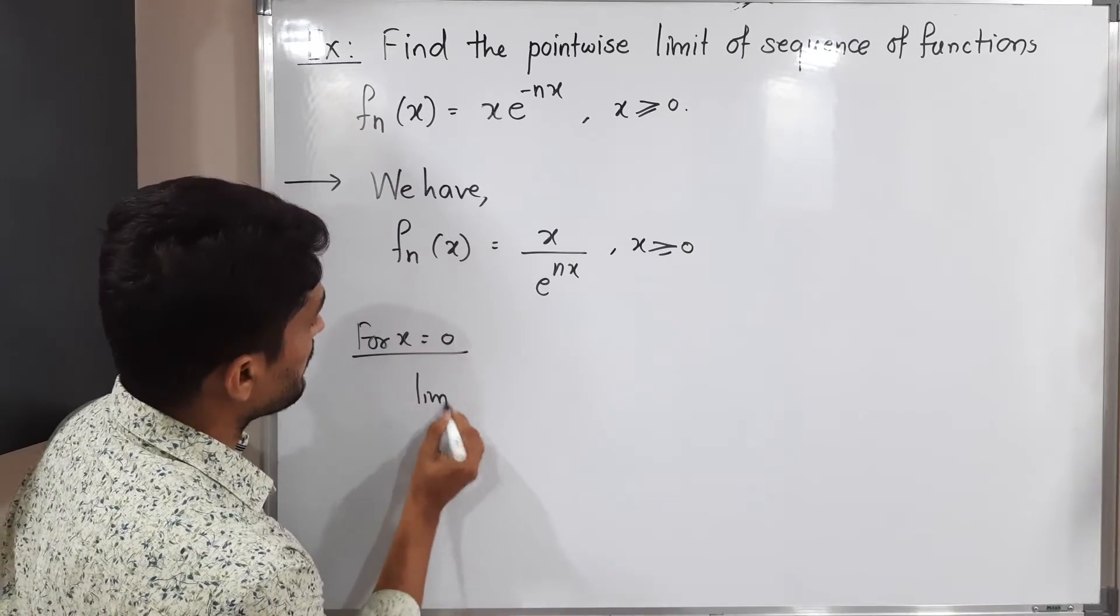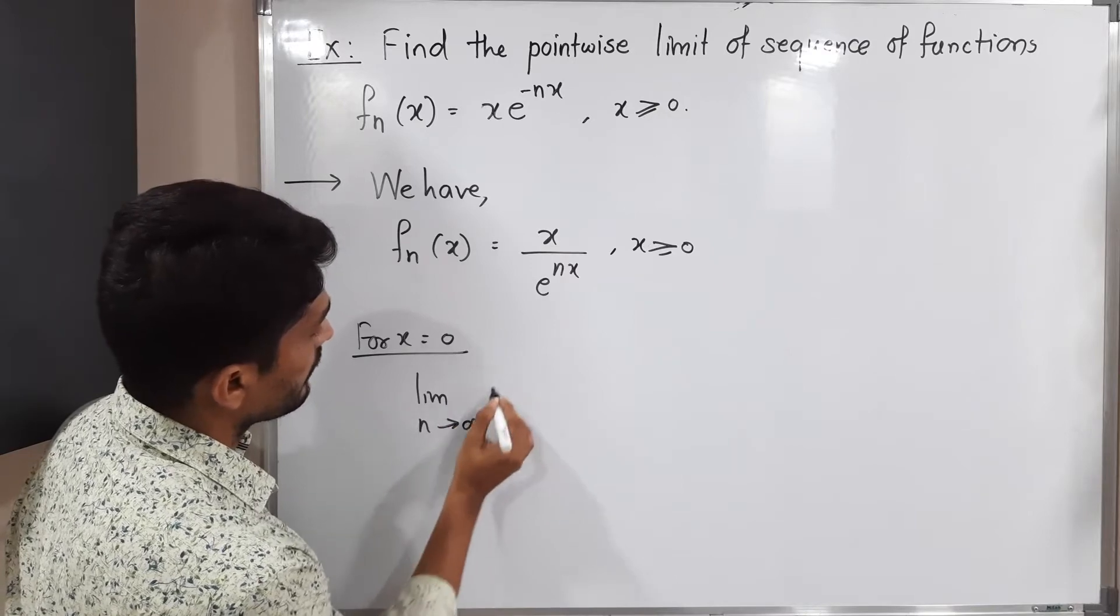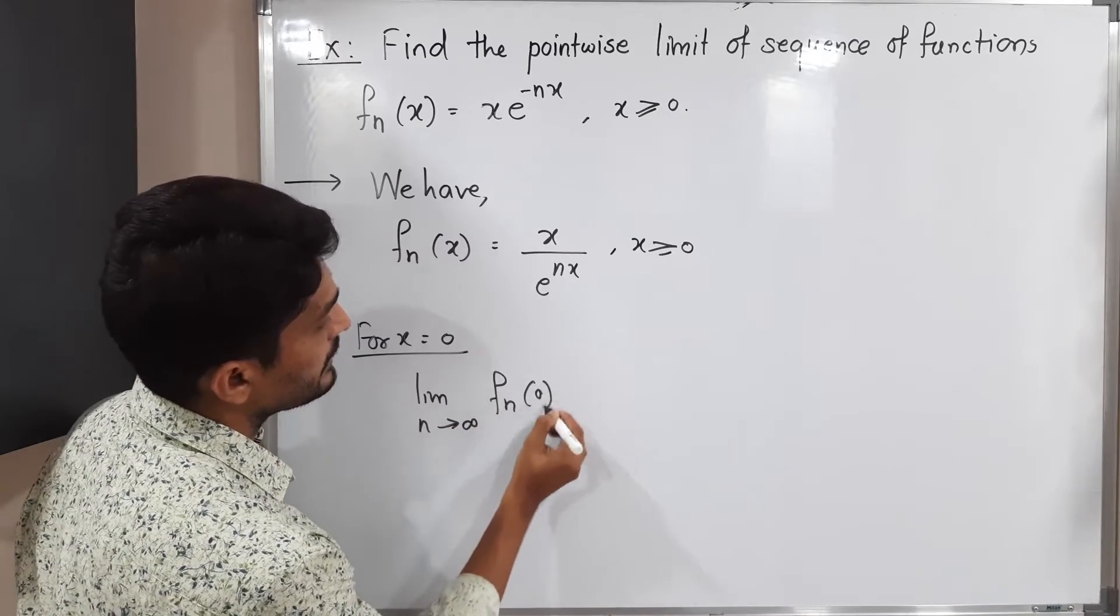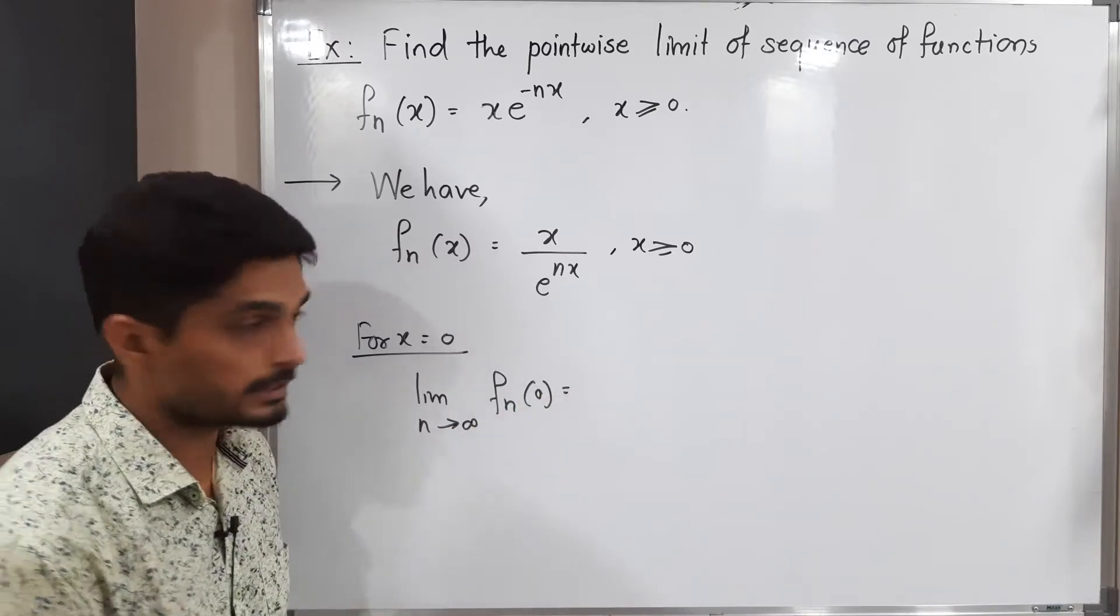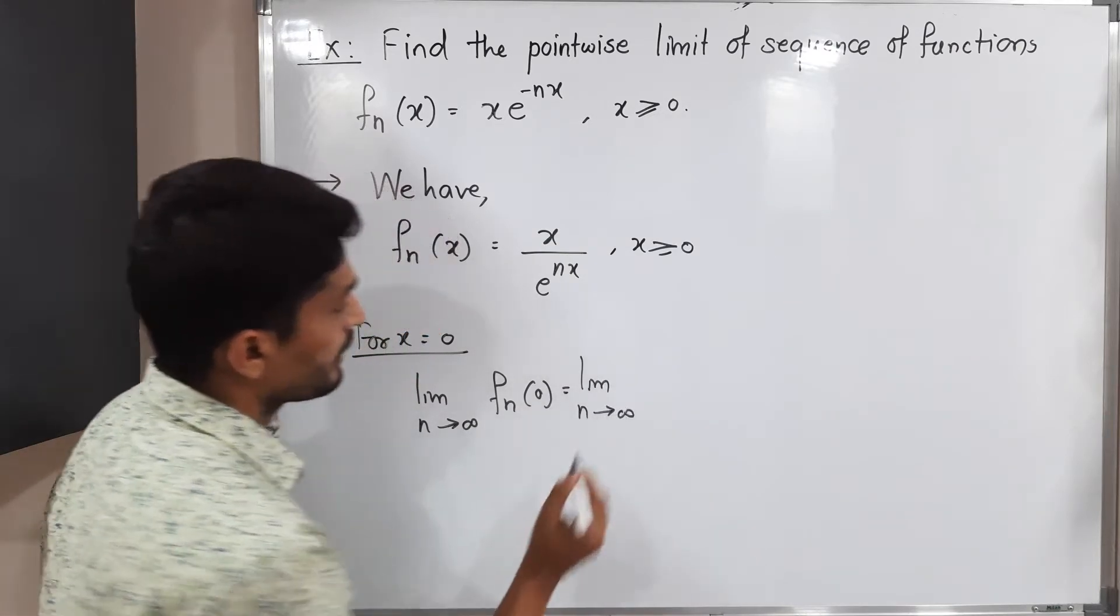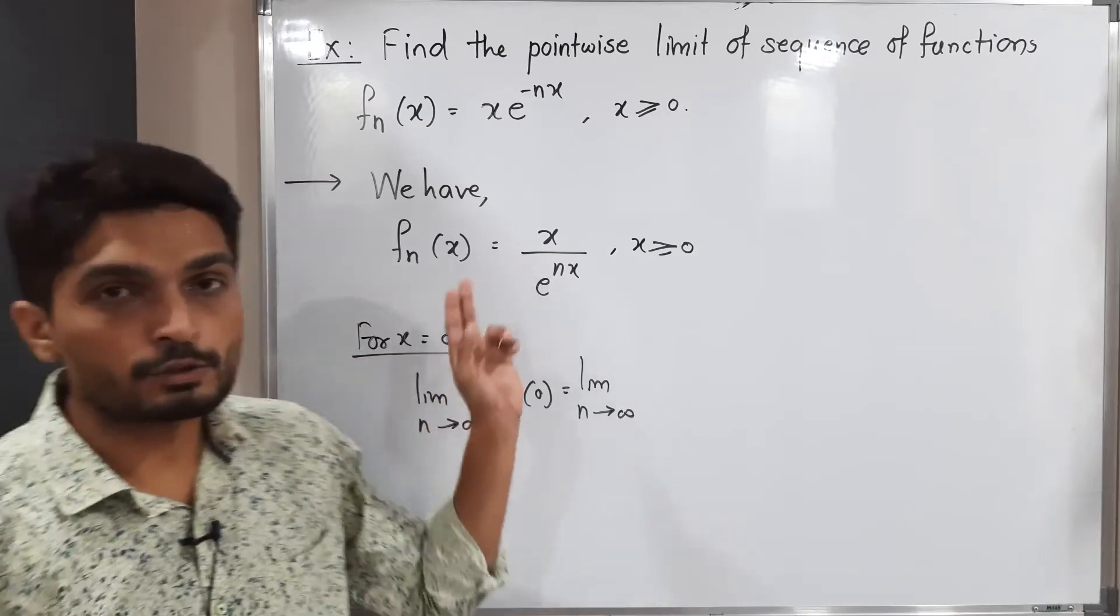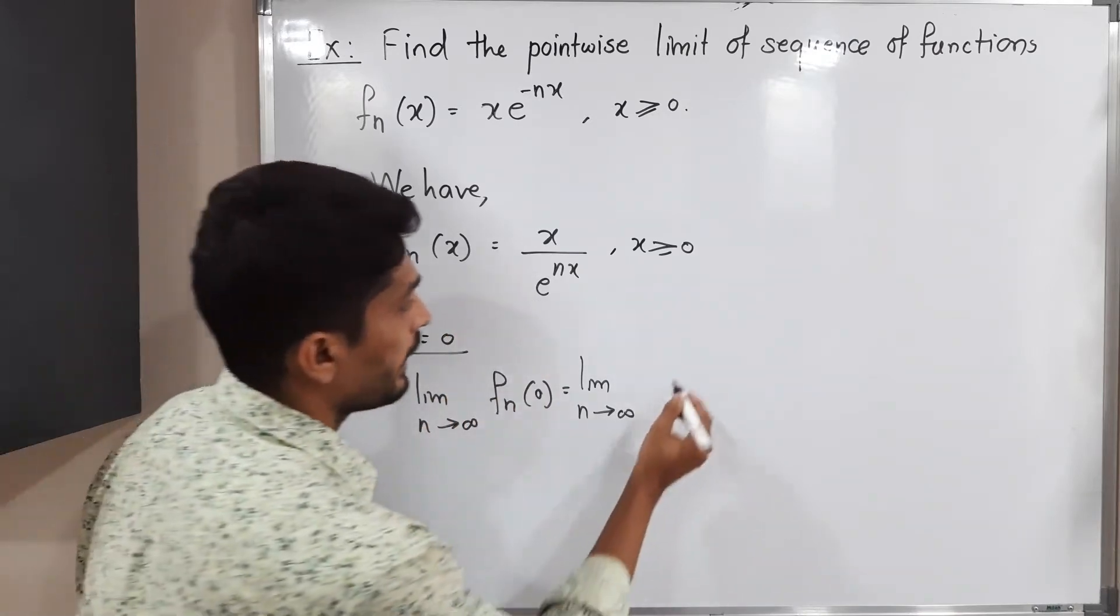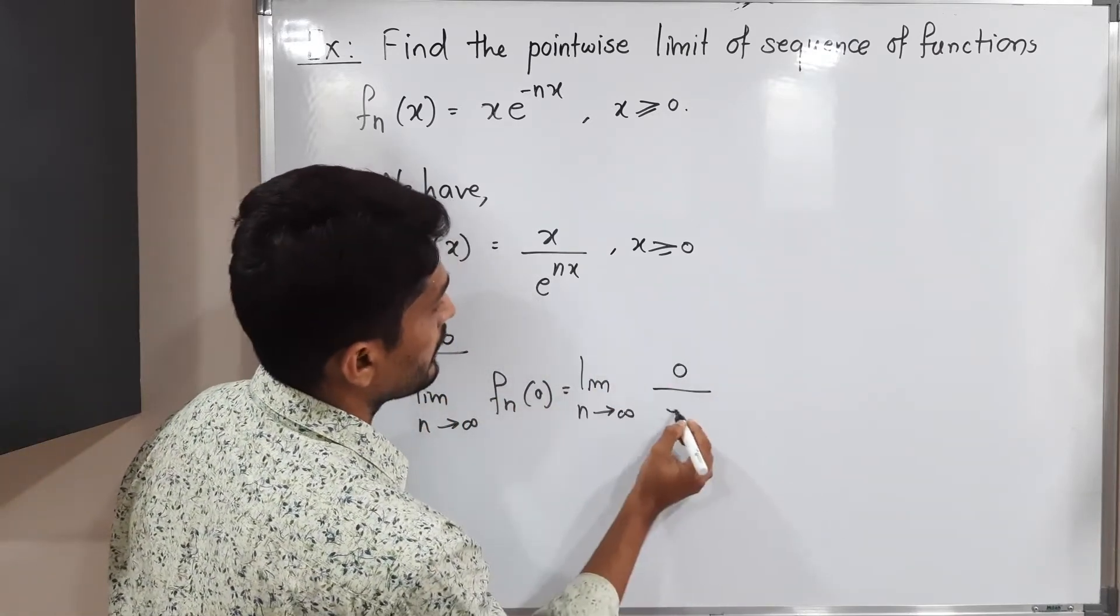Let us find the limit. lim(n→∞) fn(0). Since the value of x is 0, this equals lim(n→∞) fn(0). That means here I should put x = 0, so you will have 0/e^0.